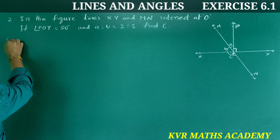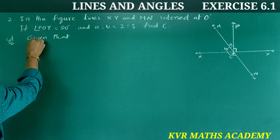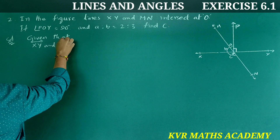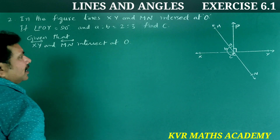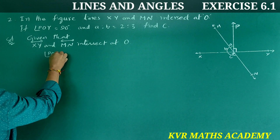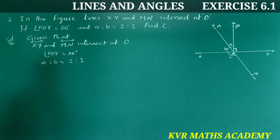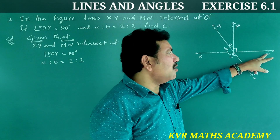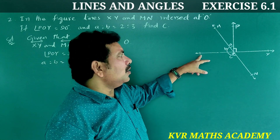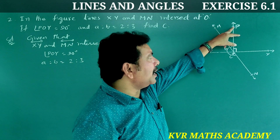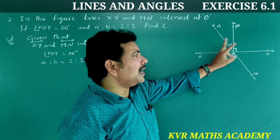Solution: Given that lines XY and MN intersect at O. Angle POY is equal to 90 degrees, and angle A to B is equal to 2 to 3. XY is a straight line, so the sum of angles is 180 degrees. Therefore, angle XOM plus angle MOP plus angle POY is equal to 180 degrees. Since angle POY is 90 degrees, A plus B plus 90 equals 180.